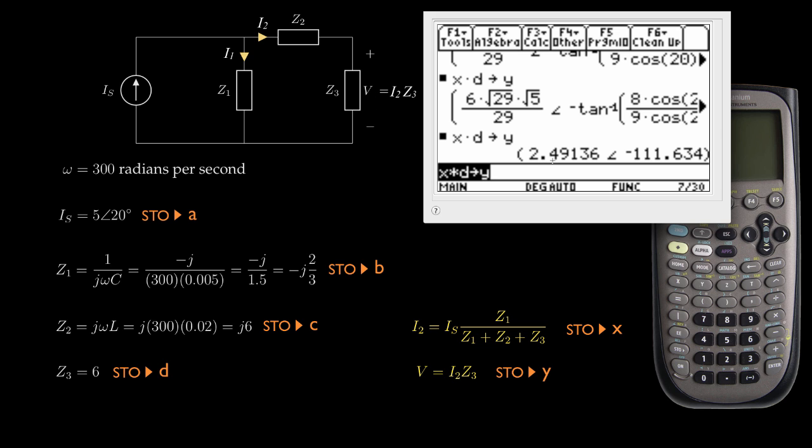What we now get is an amplitude and phase for our result. This tells me that the output voltage's amplitude is 2.49136 and its phase is negative 111.634 degrees.